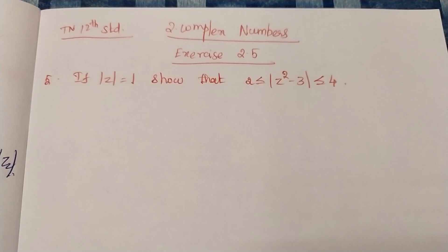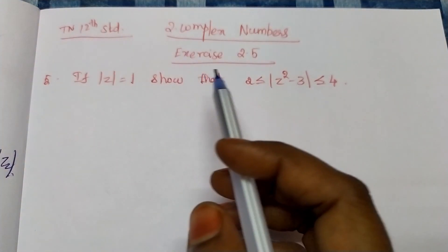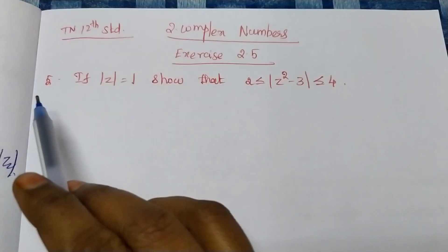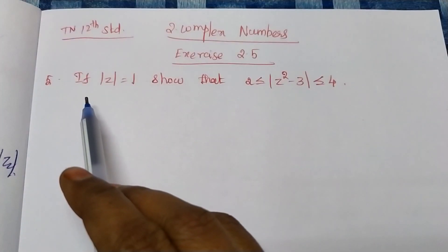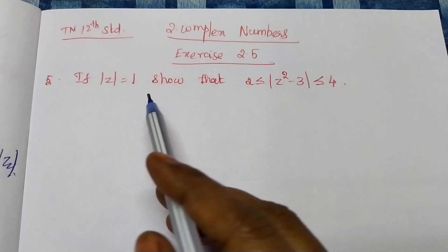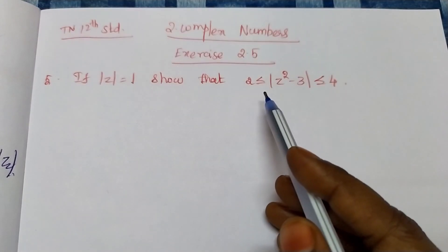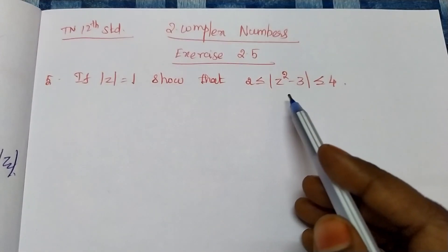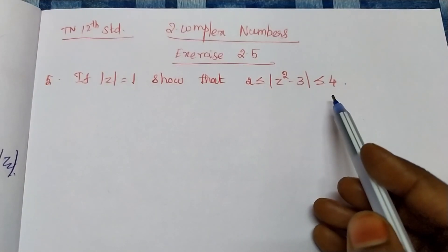Hello everyone, welcome to KRMAX. X is 2.5 in the 5th problem. If mod z is equal to 1, show that 2 is less than or equal to mod z squared minus 3, which is less than 4.